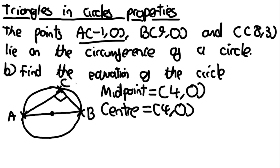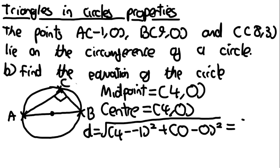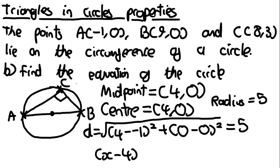The other thing needed is the radius. We find the distance between the centre and one of the points on the circumference — it doesn't matter which one. Using point A at (−1, 0) and the distance formula: D = √((4 − (−1))² + (0 − 0)²) = √25 = 5. So the radius is 5. The equation of the circle is (x − 4)² + y² = 25, since the y-coordinate of the centre is 0.